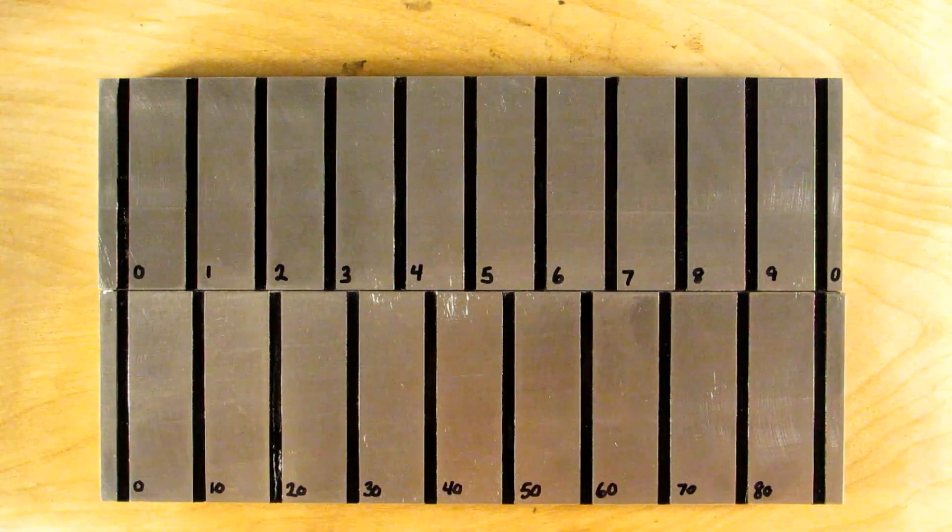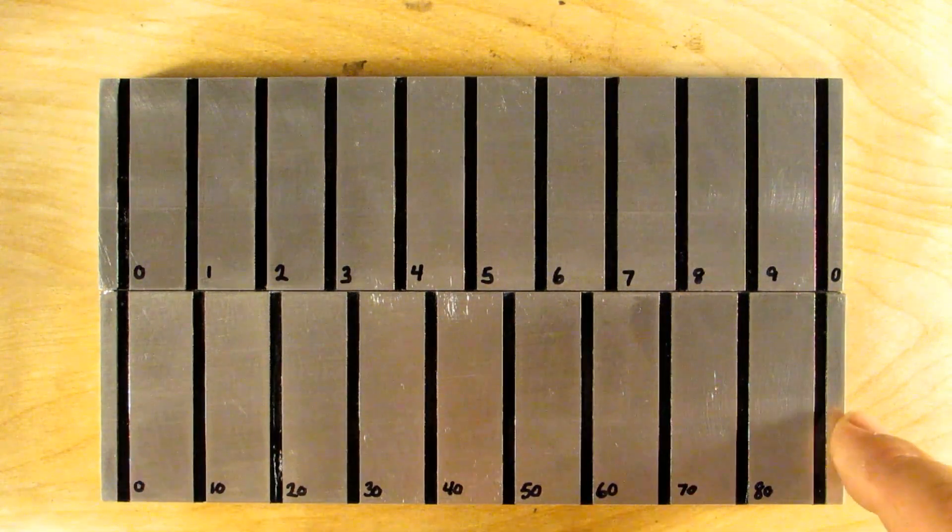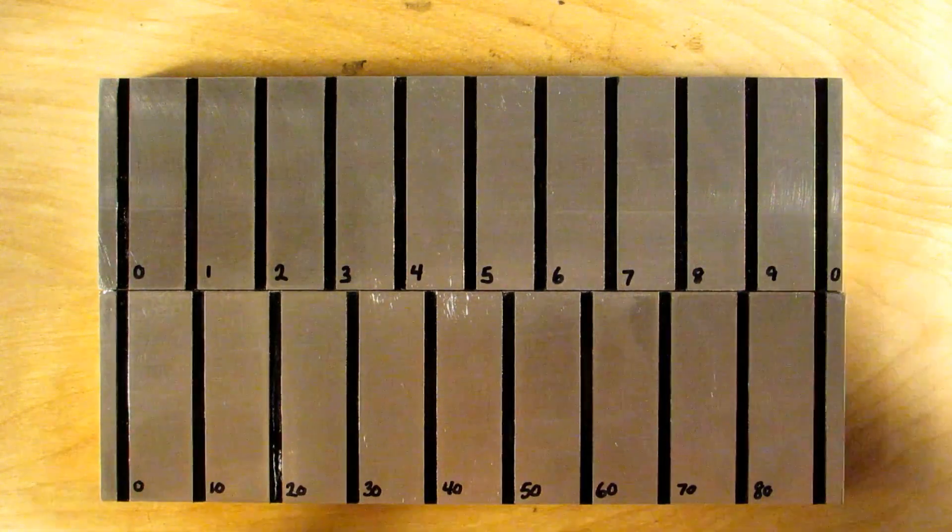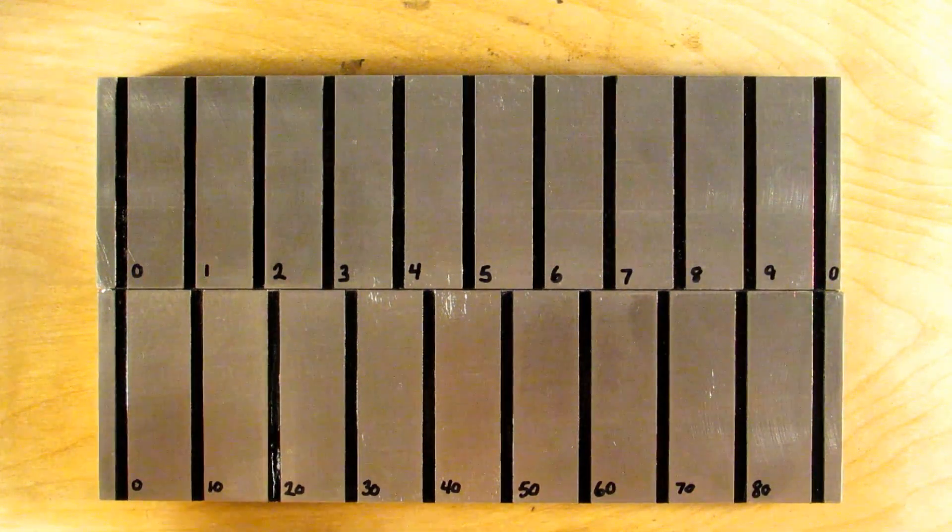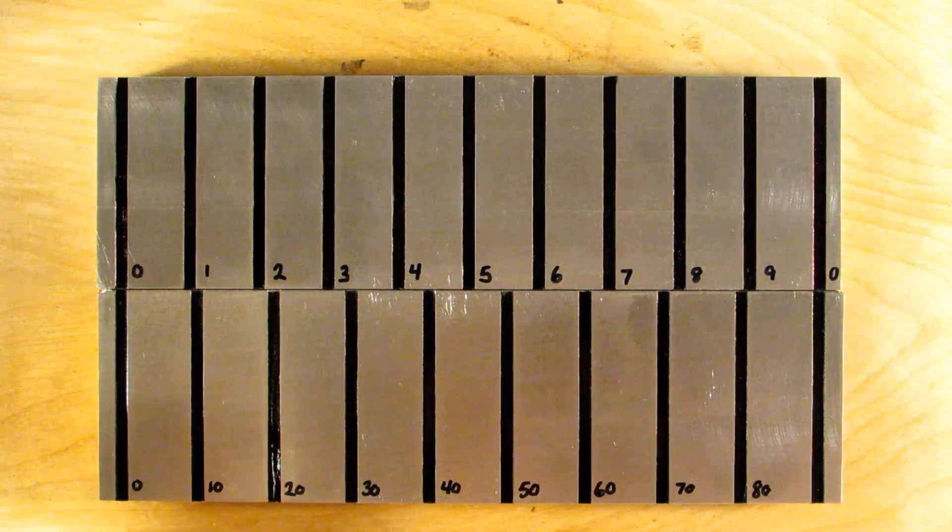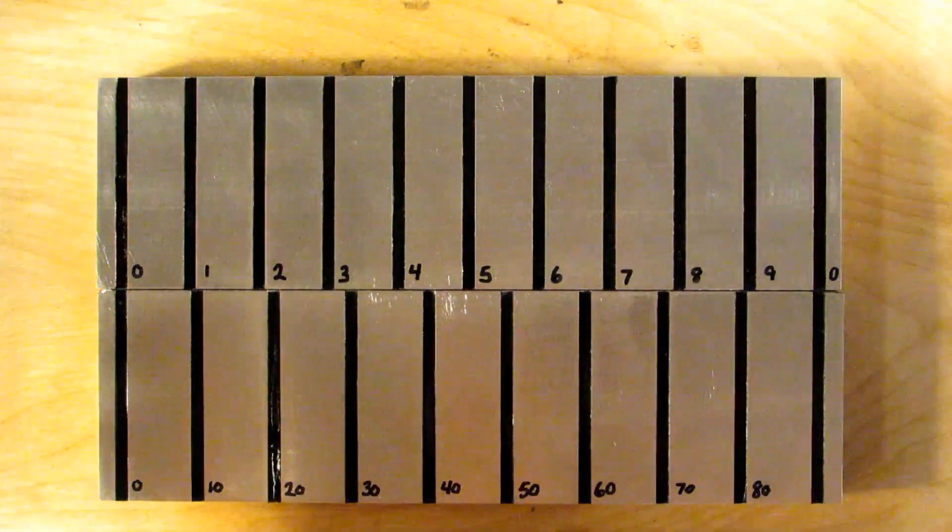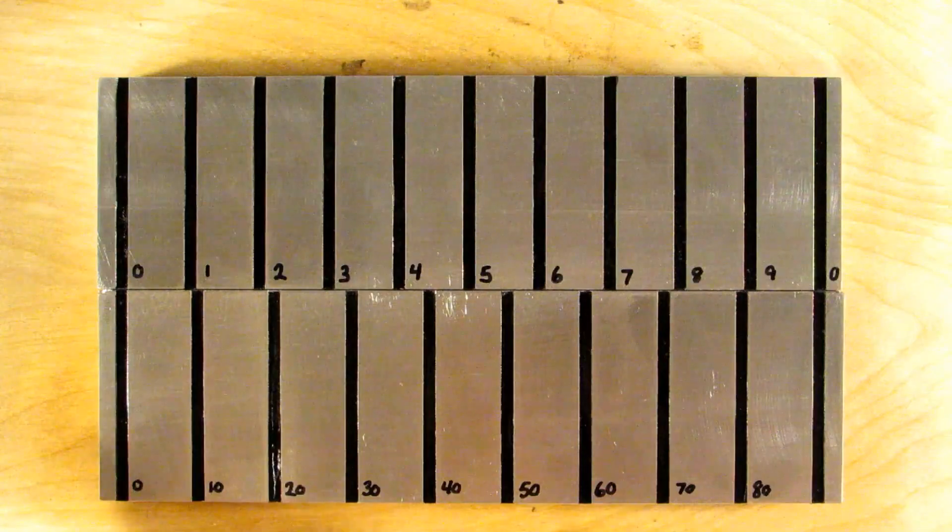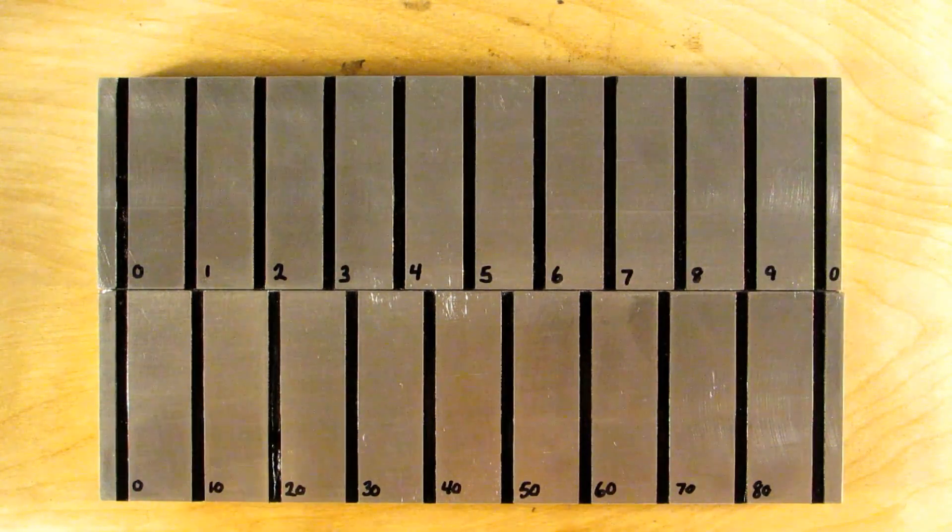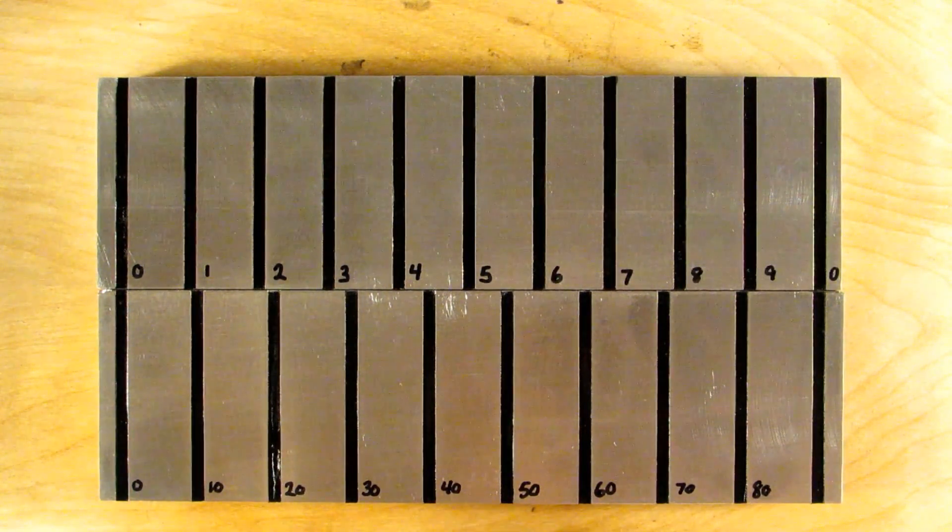What this is going to allow us to do is have a readable number of graduations on what would be the main scale of the instrument. Otherwise if you had a caliper that read to thousandths of an inch it would actually have to have one thousand divisions on it in order to read it directly and that's just not feasible. You wouldn't be able to see anything.